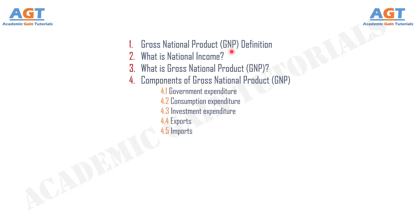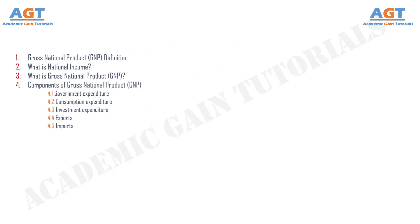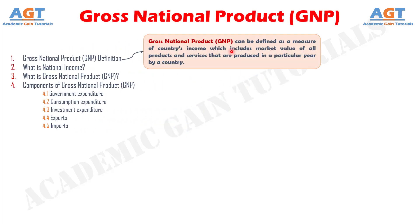Let's start by defining Gross National Product or GNP. Gross National Product, GNP, can be defined as a measure of a country's income which includes the market value of all products and services that are produced in a particular year by a country.